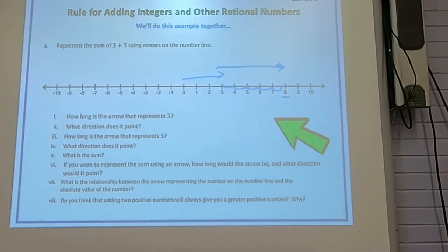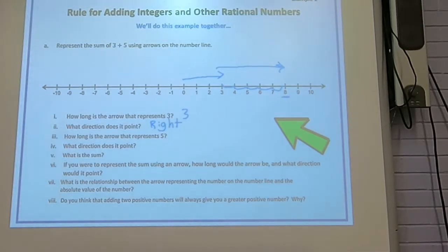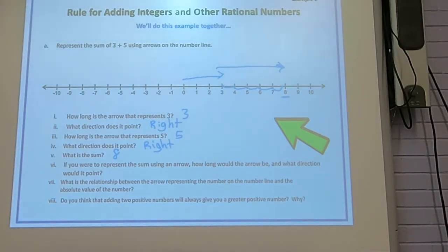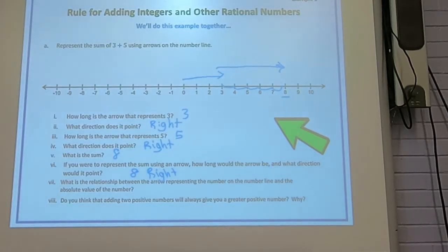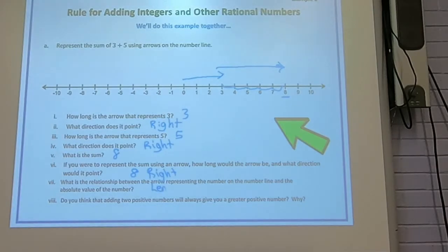How long is the arrow that represents 3? It's 3 long. What direction does it point? To the right, because it's positive. How long is the arrow that represents 5? It's 5 long. What direction? It also goes right, because it's positive. What's the sum? They add up to 8. If you were to represent the sum using an arrow, how long would it be? 8 long. In what direction? Positive, so going to the right. The length is the absolute value — the magnitude.